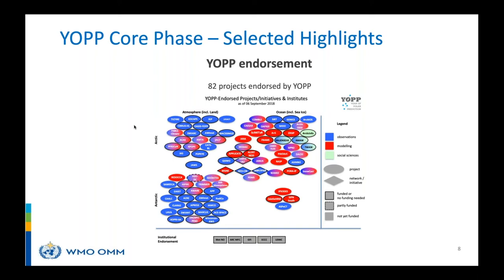Having 82 endorsed projects is certainly amazing. Some are rather large with funding in excess of 8 million euros, such as APPLICATE or Blue Action. These projects are stratified according to Arctic and Antarctic, atmosphere and ocean, with blue indicating observations, red modeling, and greenish social sciences. Things are well populated across hemispheres and Earth system components, though there is still a gap when it comes to the ocean in the Southern Hemisphere.